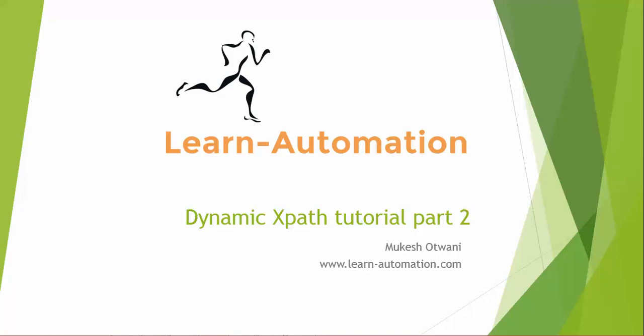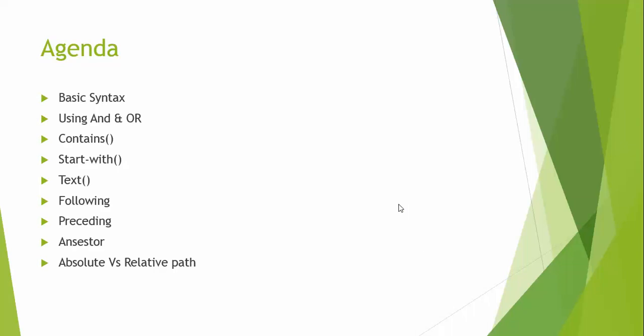Hi everyone, welcome back to learnautomation.com. This is Mukesh. This is part 2 of dynamic XPath. In the previous tutorial we covered a couple of methods — we already discussed up to the text method. In this video tutorial we will focus on following, preceding, ancestor, and absolute versus relative XPath.